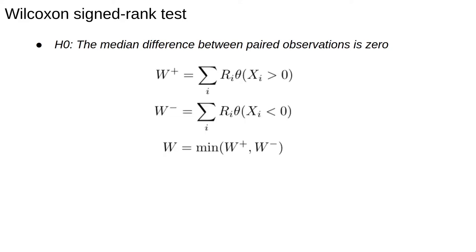The test statistic requires computing the signed rank sums W+ and W-. The symbol theta here is a function which is 1 if its argument is true, otherwise 0. Basically, W+ is the sum of the ranks of the pairs with positive difference, and similarly for W-. The test statistic is then whichever one of these is smaller.